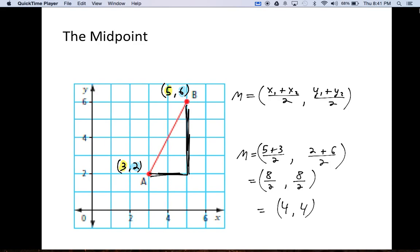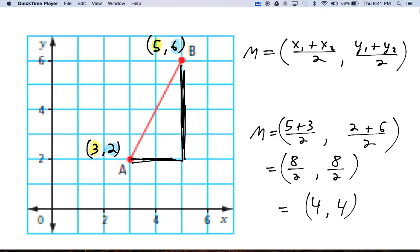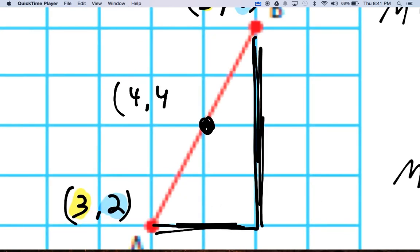So if I now go plot 4 comma 4, I go over 4 up 4, I'm going to be right there at that midpoint that we were talking about. So this midpoint is 4 comma 4.